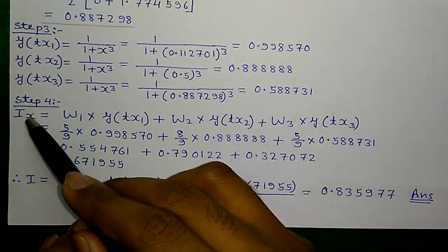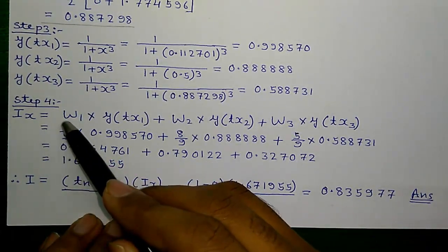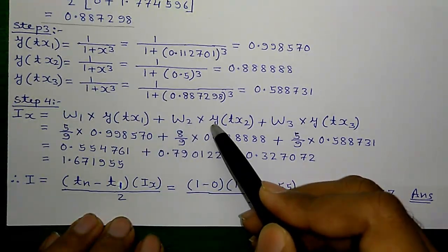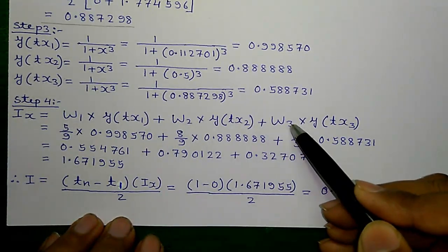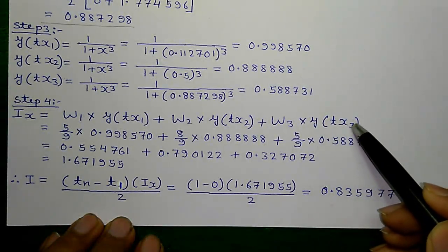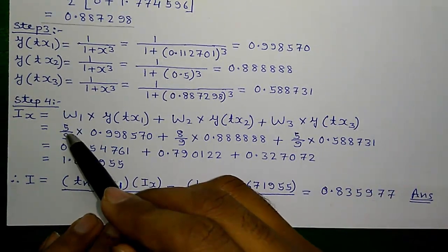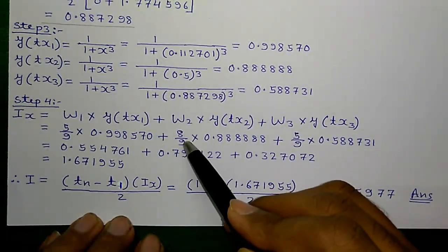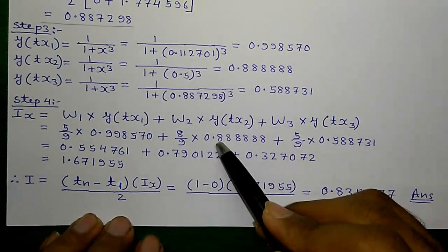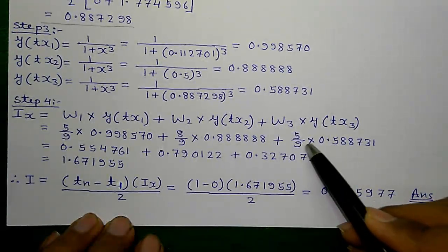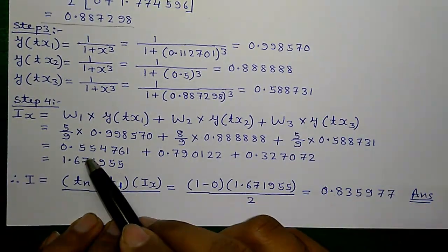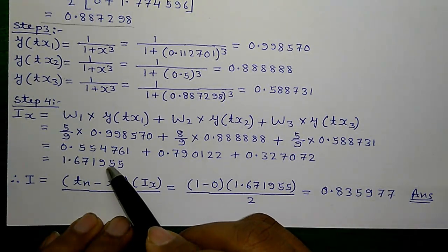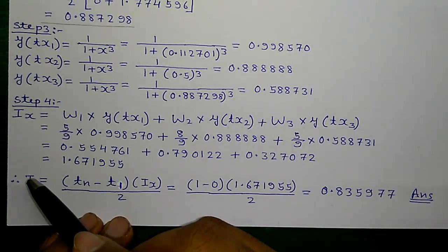Step 4, calculating ix. ix equals to w1 into y of tx1 plus w2 into y of tx2 and w3 into y of tx3. So, w1 is 5 by 9 times this value plus w2 is 8 by 9 times this value and w3 is 5 by 9 times this value. So, adding them up, you will get 1.671955.